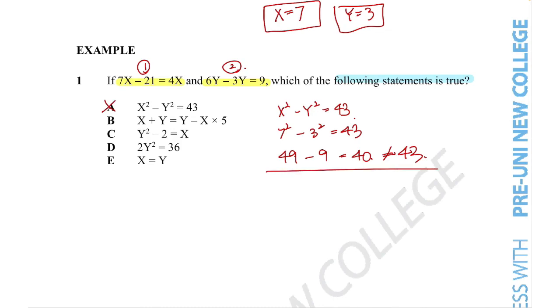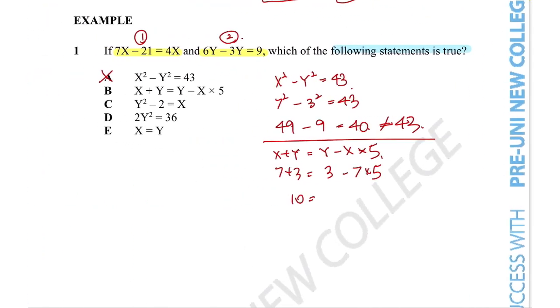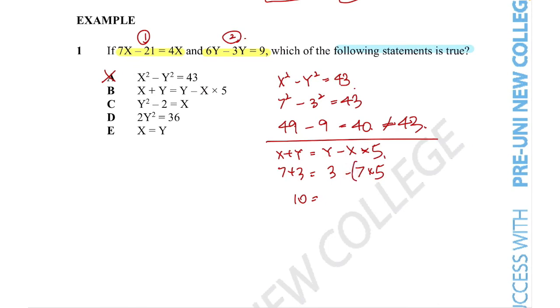Taking the similar approach for option B, x plus y is equal to y minus x times by 5. Again, substituting in the values, we get 7 plus 3 is equal to 3 minus 7 times 5. Now this hand of the equal sign is quite simple. We just add these two numbers together. But this side of the equal sign, we can see that there's multiple different operations being used. So we need to hear the rule of BIDMAS, which meant that we actually need to do the multiplication before the subtraction. So making sure we do that, we do this first. So 3 minus 7 times 5 is equal to 35. So 3 minus 35 would not give us 10. So this is not the correct answer either.